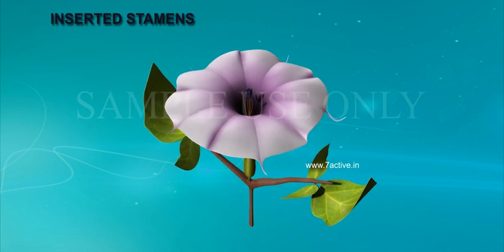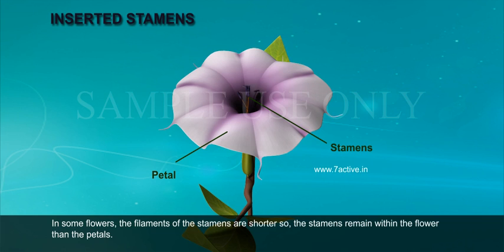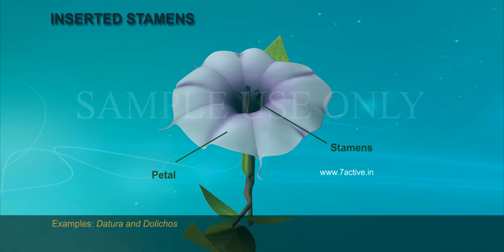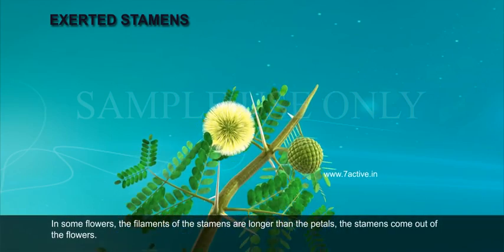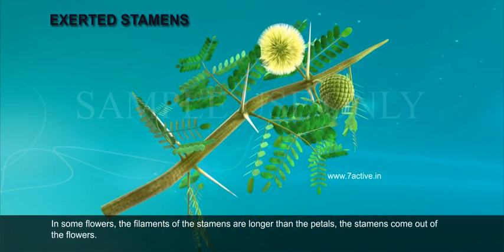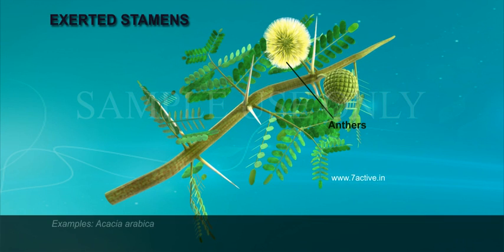Inserted stamens: In some flowers, the filaments of the stamens are shorter, so the stamens remain within the flower, not exceeding the petals. Exserted stamens: The stamens come out of the flower. Example: Acacia arabica.